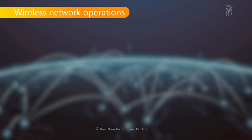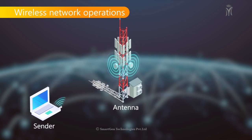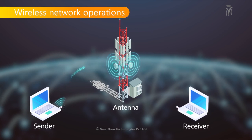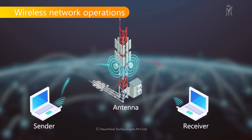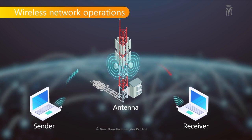Wireless Network Operation: A wireless adapter receives data from the computer and translates it into a radio signal. The radio signal is then transmitted through an antenna. The wireless router receives the radio signal, decodes it, and sends the data to the receiver.